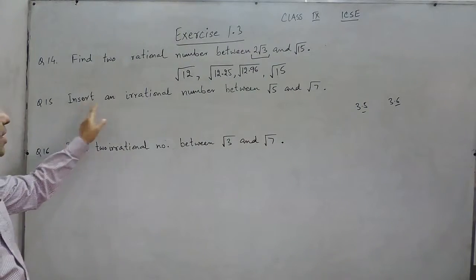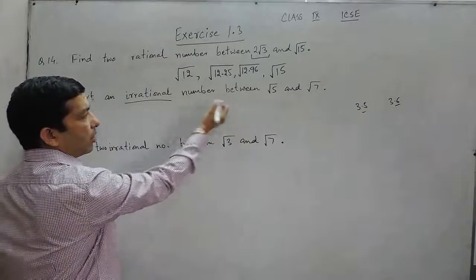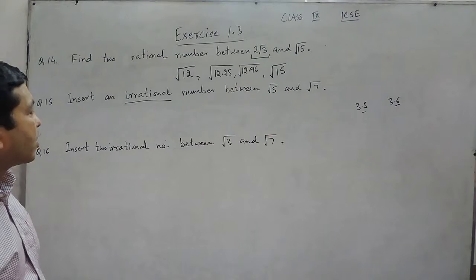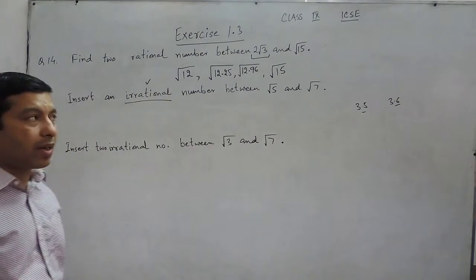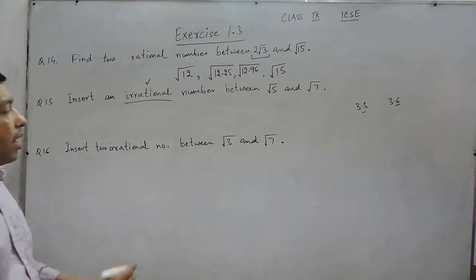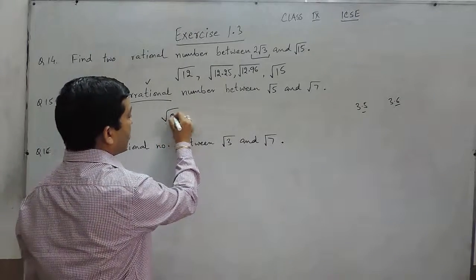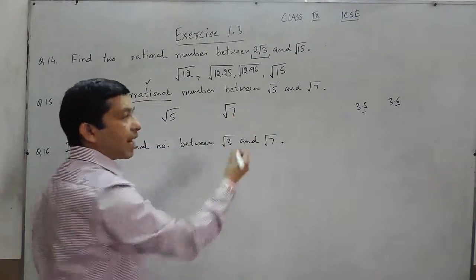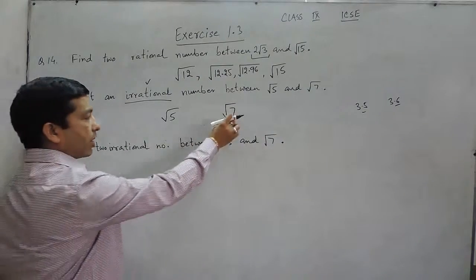Question number 15 is: insert an irrational number between root 5 and root 7. Now, when we talk about irrational numbers, we understand that under root 5 and under root 7 are themselves irrational numbers because they are not perfect squares.